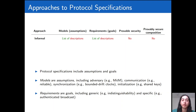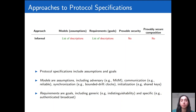Going back to how we can define specifications, the first way is to write a list of descriptions of the assumptions in words and then a list of the goals. This separates the assumptions from the goals, but it doesn't facilitate provable security. This is the approach used in systems papers, where models and requirements are informally defined properties in English — which is natural and easy to understand, but informal arguments can be misleading, can overlook things, and it can be difficult to tell if they're correct.